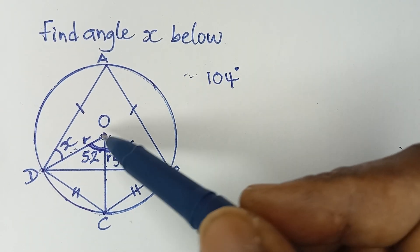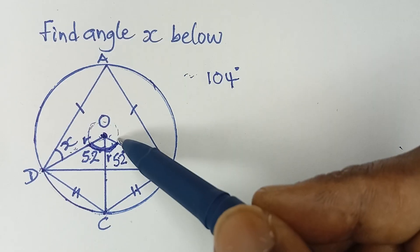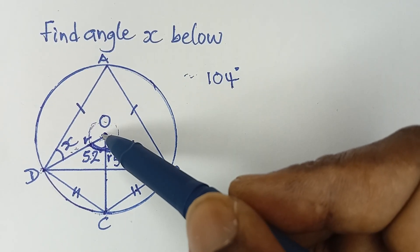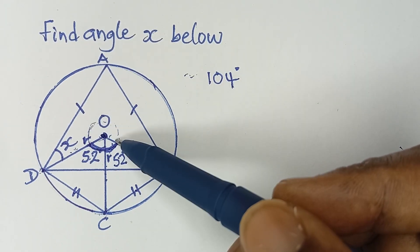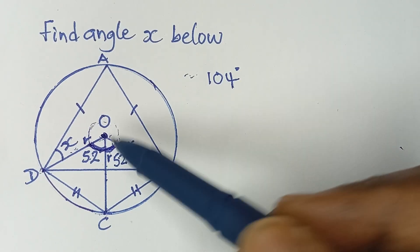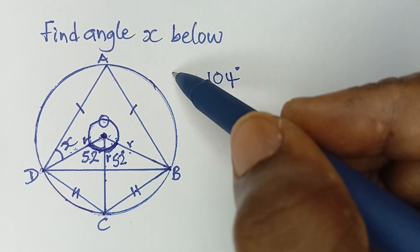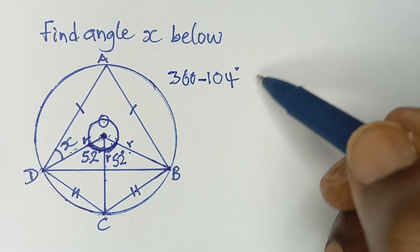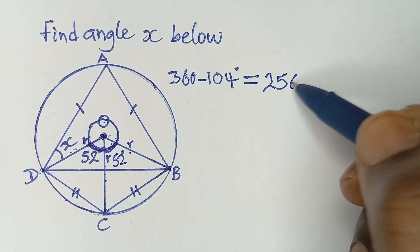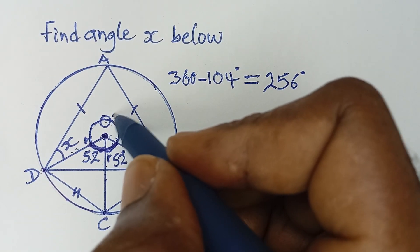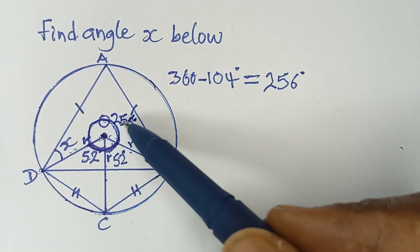The angle at this center is 104 degrees. Now, looking at center point O — if we go around this point, the sum of angles at a point is 360°. Since this side is already 104°, the remaining angle will be 360 − 104 = 256 degrees. So this angle here at the center is 256 degrees.